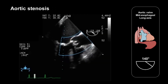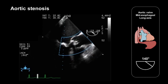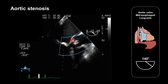Let's take a look at a couple of examples of pathology. This is a patient with severe aortic stenosis, and this mid-esophageal long axis view of the aortic valve shows thickened and calcified aortic valve cusps with greatly reduced cusp mobility.